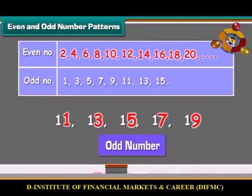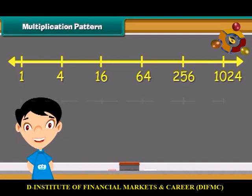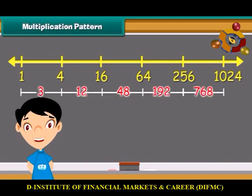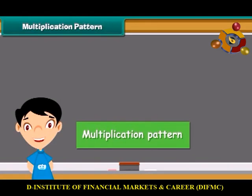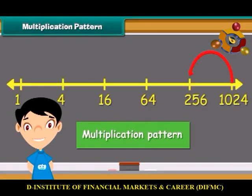Look at the pattern given here: 4, 16, 64, 256, 1024. The differences between two numbers in the series are varying — the differences are 12, 48, and 192. This means they do not follow an addition or subtraction pattern. The pattern followed is called a multiplication pattern. In this pattern, the next number is obtained by multiplying the previous number by 4.